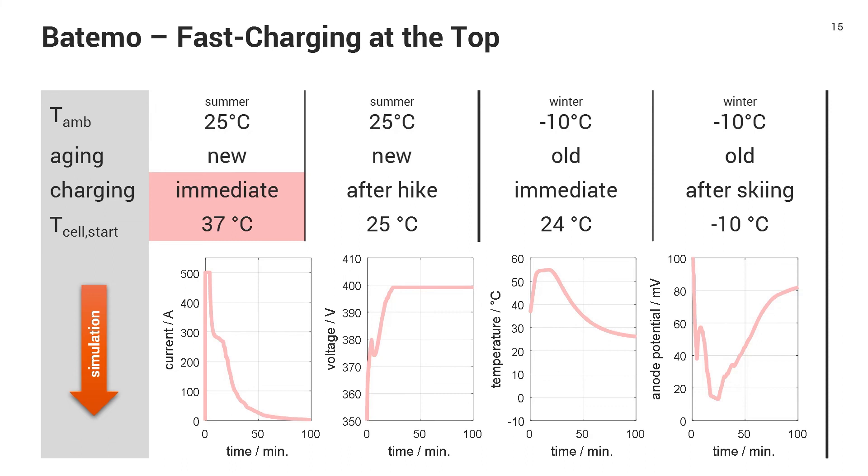So how does this change if you charge after the hike? Not that much, because the temperature difference from 37 to 25 degrees C of the cell is not too big. Nevertheless, you can charge a little faster because you hit the maximum temperature a little later.